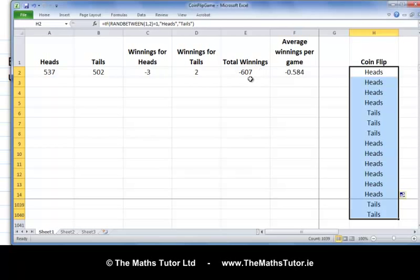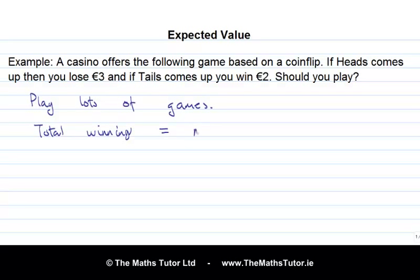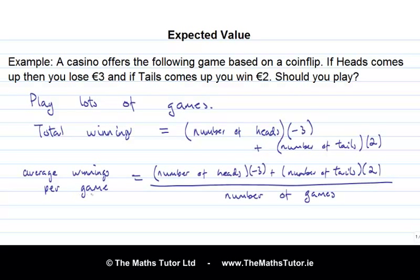So even though the total winnings change every time, the average winnings don't change that much. Let's explain what's happening theoretically. If we play lots of games, our total winnings equal the number of heads times minus 3, plus the number of tails times 2. To get the average winnings per game, we divide by the total number of games: average winnings = (number of heads × −3 + number of tails × 2) / total number of games.